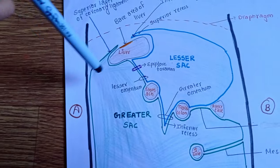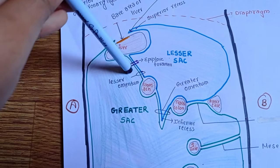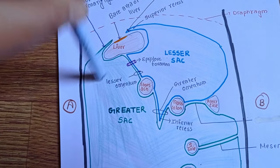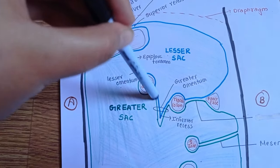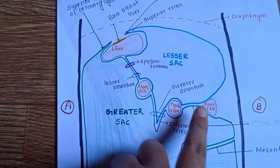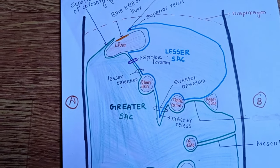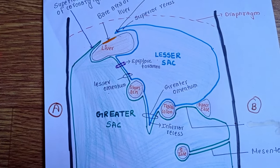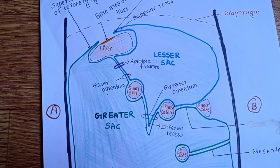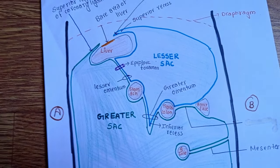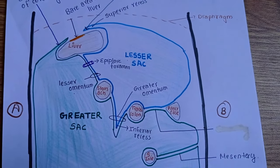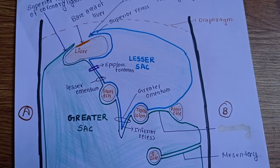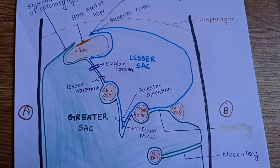Now there is a small foramen here which is known as epiploic foramen and it helps in the communication of the greater sac and the lesser sac. Now talking about the lesser omentum, it has two modifications which are hepatogastric ligament and hepatoduodenal ligament. Talking about its contents, it has hepatic artery proper, the portal vein, bile duct, lymph nodes and lymphatics, and hepatic plexus of nerves.